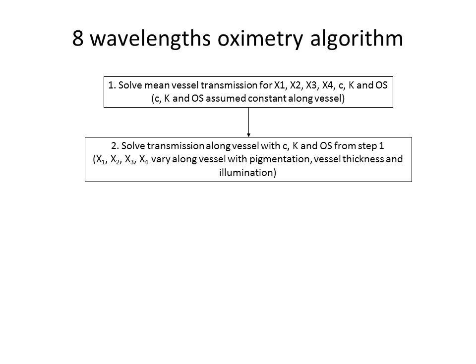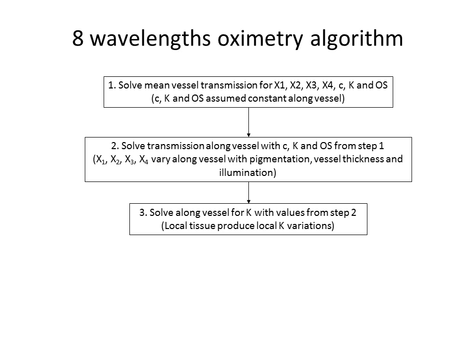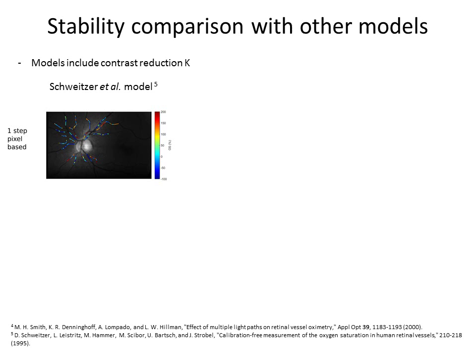Now we will solve for the path lengths that will vary along the vessel, because we will find variation in pigmentation, vessel thickness, and even illumination along the vessel, especially if we have long vessels. Once we have found that, we solve again using these parameters to find contrast reduction along the vessel. This is interesting because sometimes we can have local variations in contrast. We may have some tissue over some parts of the vessel which will reduce the contrast in that region. Finally, the final step is to find the oxygen saturation using the K from here, the concentration from here, the path length contribution from here, and the concentration from this step.